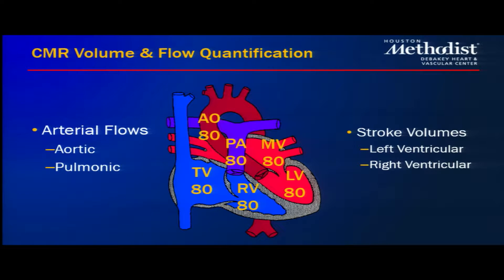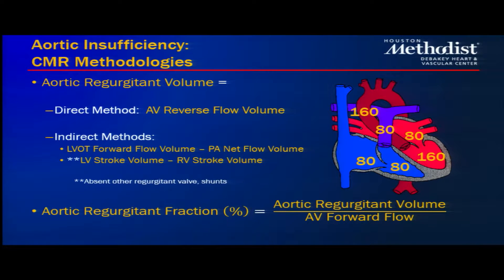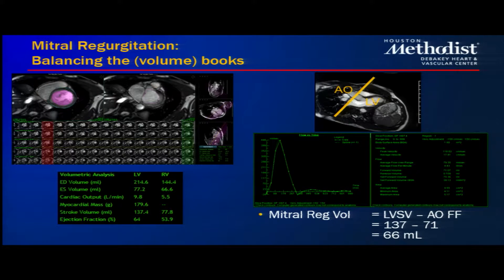A direct application is aortic regurgitation. By setting the scan plane perpendicular to the flow, we can directly measure the aortic regurgitant volume — 80 cc's in this example — yielding a regurgitant fraction of 50%. We have additional methods: comparing flow volume through the LVOT and aorta versus PA net flow, or in the absence of other valvular lesions, comparing the difference between LV and RV stroke volumes.